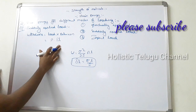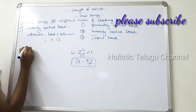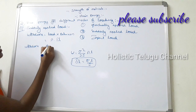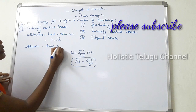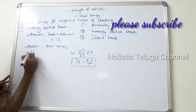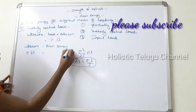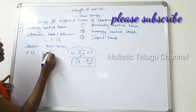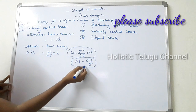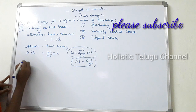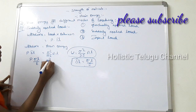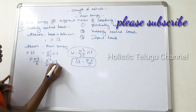Work done is equal to strain energy. Work done is delta P into delta L. Strain energy is sigma squared over 2E. Delta L is equal to sigma L by E. Sigma L by E equals sigma squared over 2E.